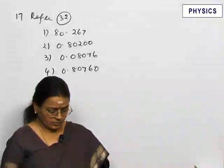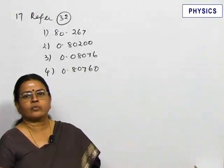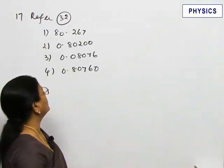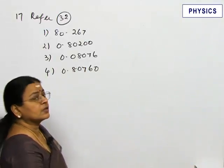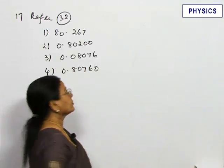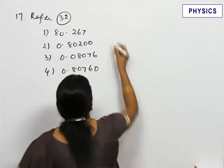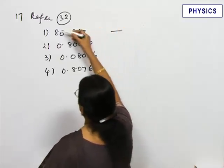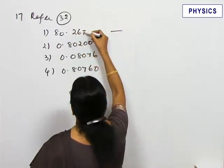Refer question number 32: which of the following numbers has the least significant figures? Now we have to apply the rule of finding significant figures. The number of significant figures in the first one is 5 — counting 1, 2, 3, 4, 5.